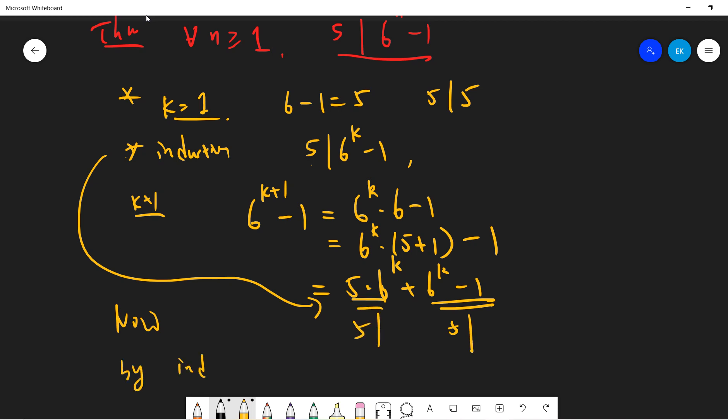So by induction, I know that 6 to the k plus 1 minus 1 is divisible by 5.